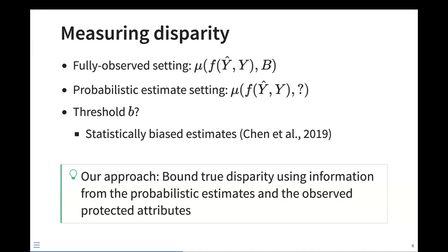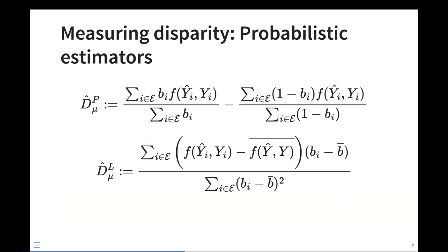Our proposal is, instead of treating estimated protected attributes as true protected attributes, to use the information available from both unlabeled and labeled data to bound the true disparity. We construct two estimators: the first is DP, our probabilistic estimator, which is a weighted fairness metric where the weights are our estimated probabilistic protected attribute. The second is DL, our linear estimator, which is the coefficient from the linear regression of our fairness metric on the estimated protected attribute little b.